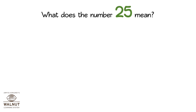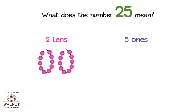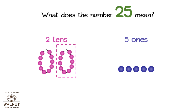What does the number 25 mean? It means there are two tens and five ones. Let's show this as beads. Now if we break apart one ten,